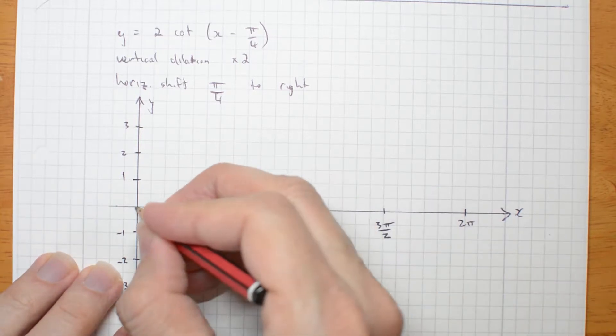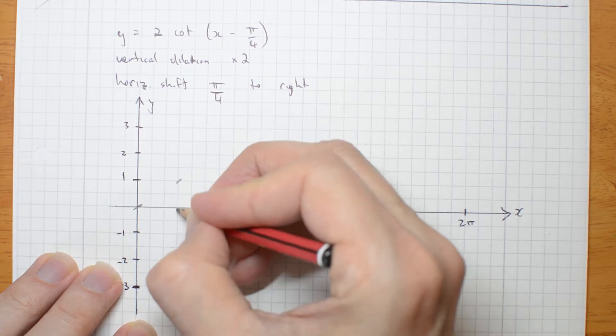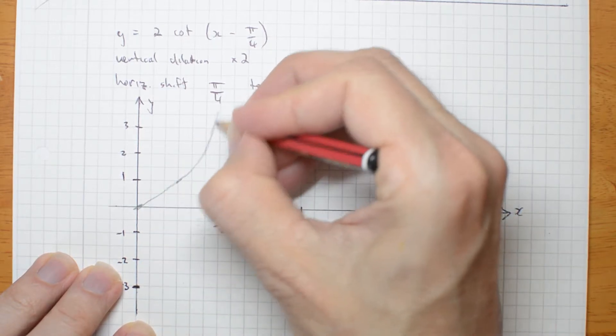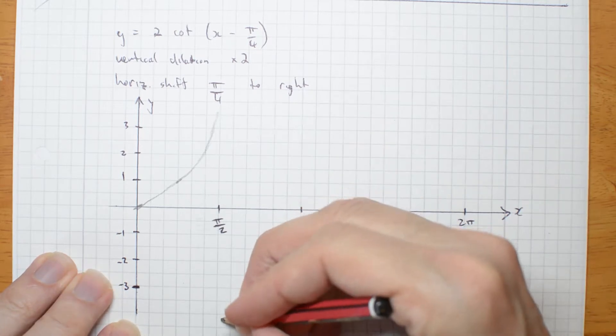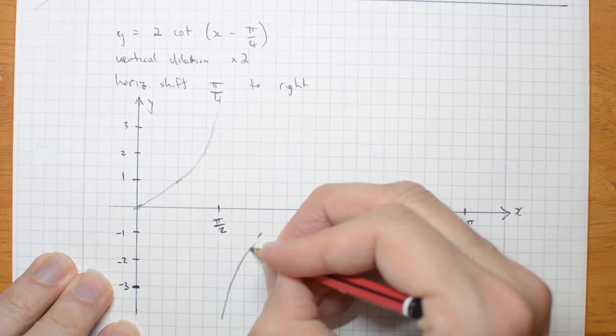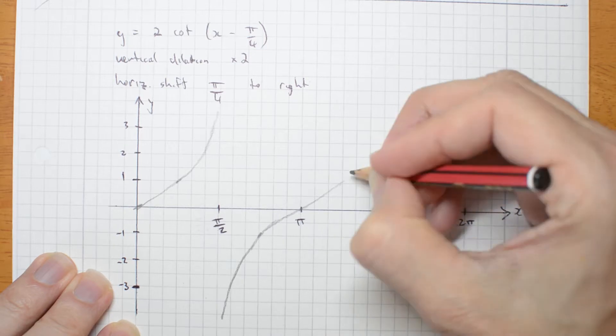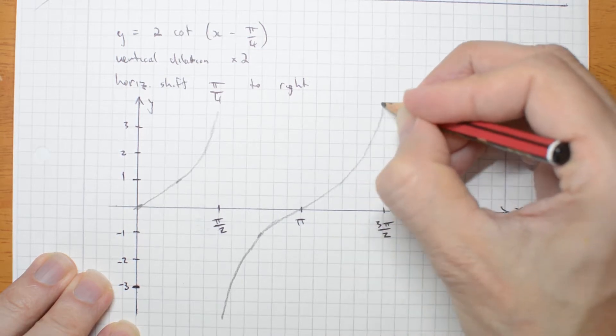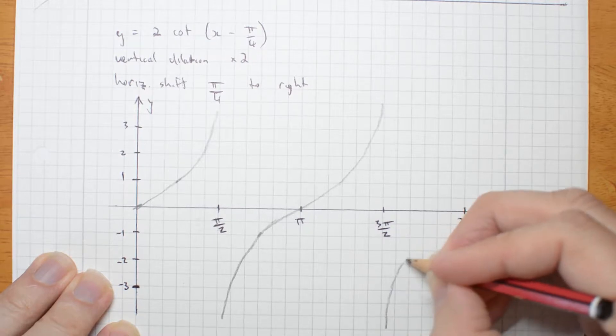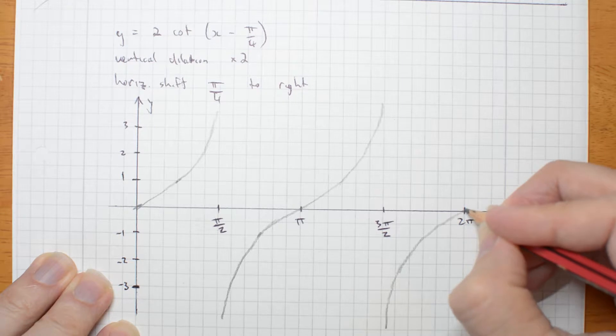The normal tan graph comes up at 0, has value 1 at pi on 4, and then goes up to an asymptote at pi on 2. Comes up here. Value 1 there. And then value 1 there. Going up here. Then coming back up at the bottom again. Value 1 there. And going through 2 pi.